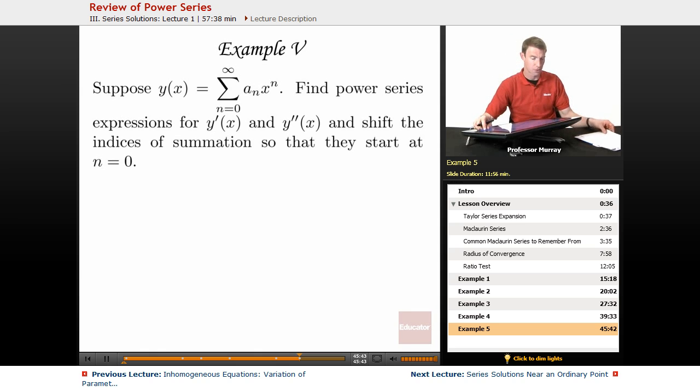In our last example here, we've got y of x is the sum from n equals 0 of a sub n x to the n. So we're being given a generic power series. And we want to find power series expressions for y prime of x and y double prime of x. And then we're going to shift the indices of summation so that they start at n equals 0.